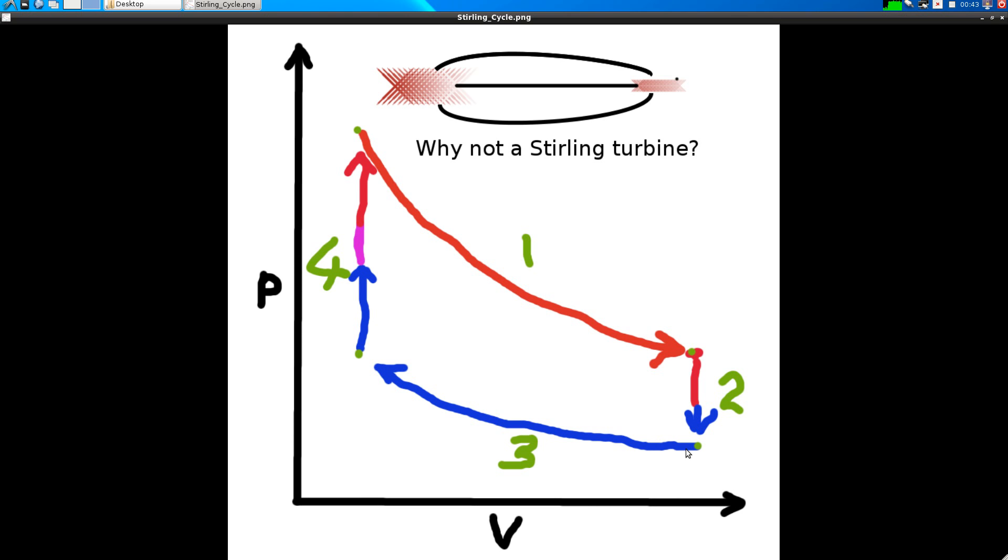You could have the cold air running through one chamber here, another chamber where the pressure is increasing, another chamber where the volume is decreasing, and then pressure decreasing. You could do these cycles in four little chambers.